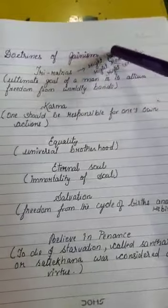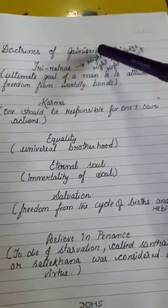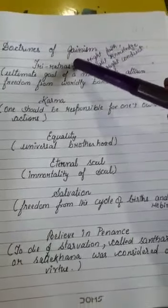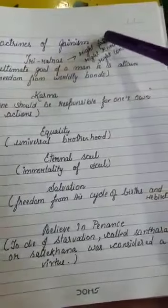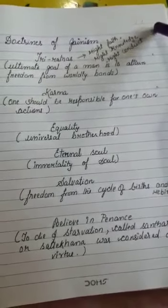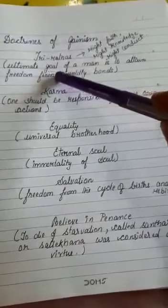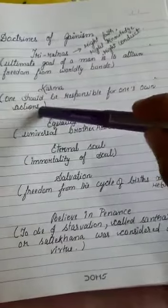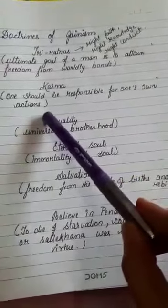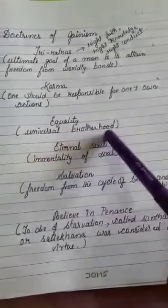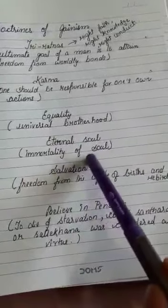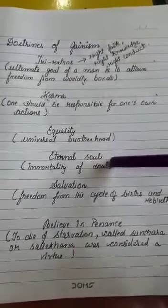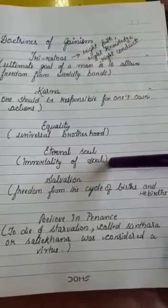Let us discuss the doctrines of Jainism. Mahavira preached that the ultimate goal of a man is to attain freedom from worldly bonds, that is, to attain Moksha — achieved through the three Ratnas: right faith, right knowledge, and right conduct. He also taught the concept of Karma — that one should be responsible for one's own actions. He preached equality and universal brotherhood. Regarding the eternal soul, Mahavira said that the body dies but the soul does not — this is the immortality of the soul.